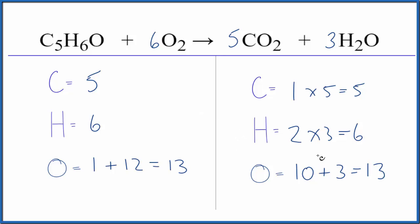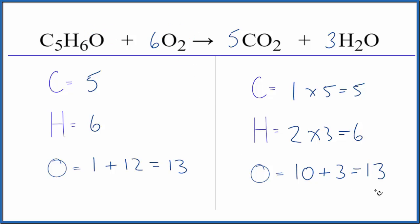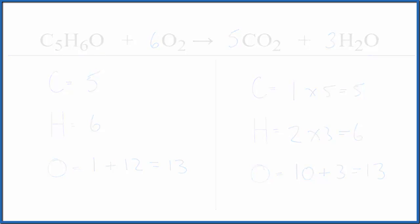Two keys here. One: leave the oxygens till last when you're balancing these combustion reactions. And then when you get to that last oxygen, you need to think about how this oxygen and these oxygens add up to give you this number here. This is Dr. B with the balanced equation for C5H6O plus O2. Thanks for watching.